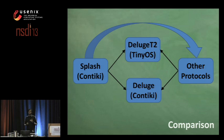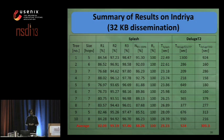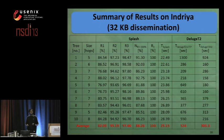We also compare SPLASH against Deluge implemented in Contiki. Using Deluge as a baseline allows us to compare SPLASH against many other existing protocols, because most protocols in the literature are also compared against Deluge. The table summarizes our results on Indriya for 10 random dissemination trees while disseminating a 32-kilobyte object.